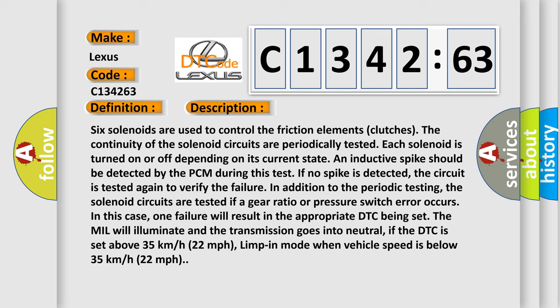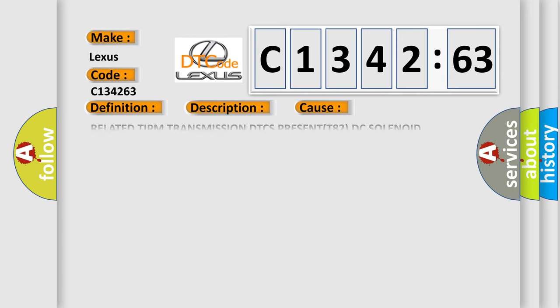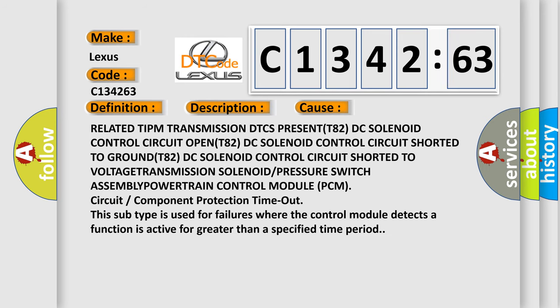If the DTC is set above 35 kilometers per hour (22 miles per hour), limp-in mode when vehicle speed is below 35 kilometers per hour (22 miles per hour). This diagnostic error occurs most often in these cases.